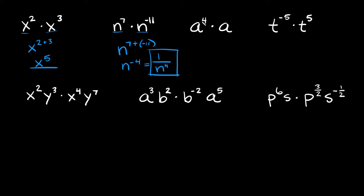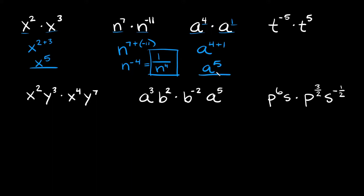Coming over here, we have a to the fourth times a — and when there's no exponent you can always assume there's a 1 right there. So we have an a and an a, we keep the a and add the exponents together: 4 plus 1 equals 5. So your answer would be a to the fifth.